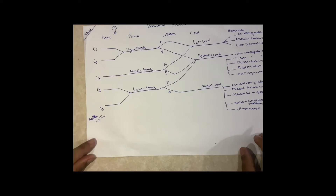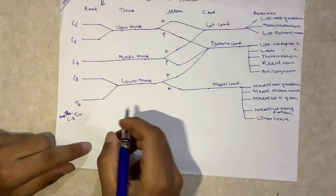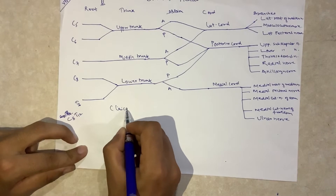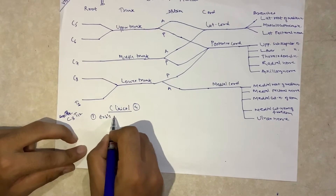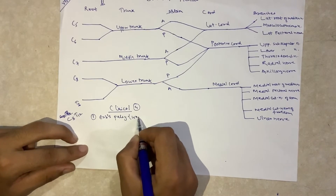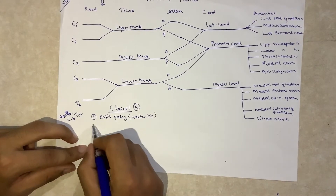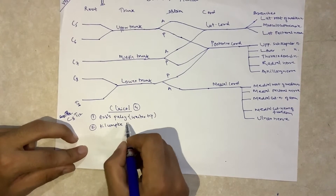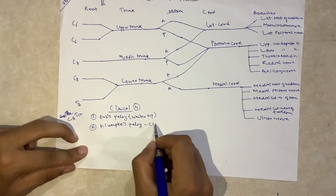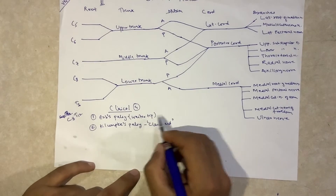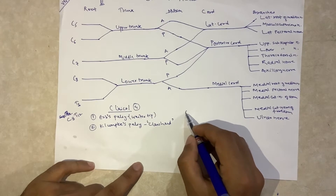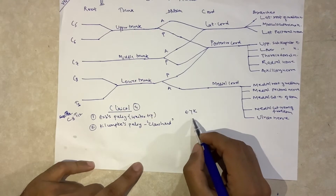Hello friends, this is a continuation of a video I previously made on brachial plexus. Here we are going to talk about the clinical significance of brachial plexus injuries. We will talk about four conditions: the first one is Erb's palsy, also known as Erb-Duchenne palsy, and the second is Klumpke's palsy, also known as claw hand.